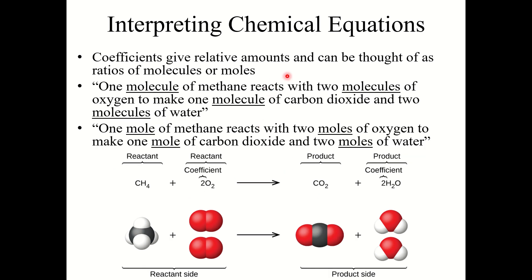Now you notice I used the phrase 'molecule,' which is often what we use. But specifically in this chapter, we're going to focus on using the word 'mole' instead. Because that coefficient works both ways — we could describe this as 1 molecule, 2 molecules, etc. But what's more useful with stoichiometry and macroscale reactions is to use the word mole.